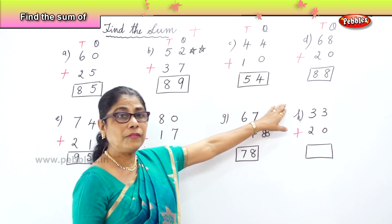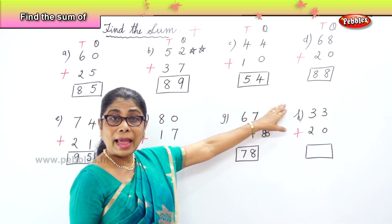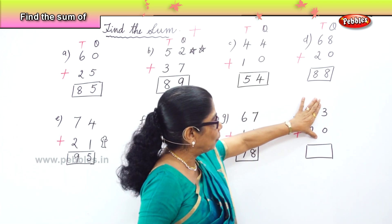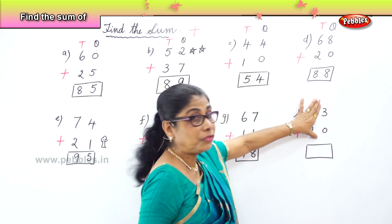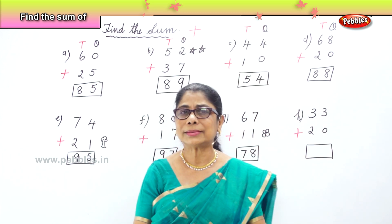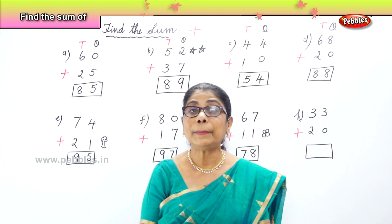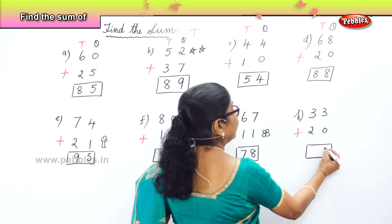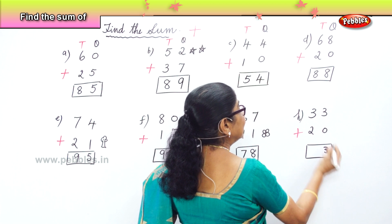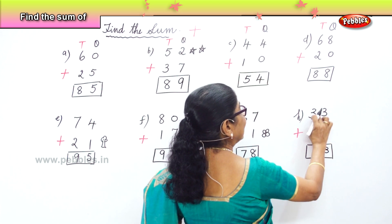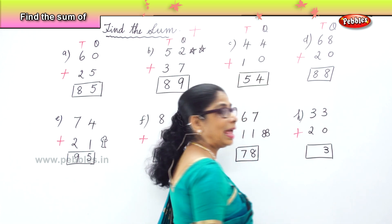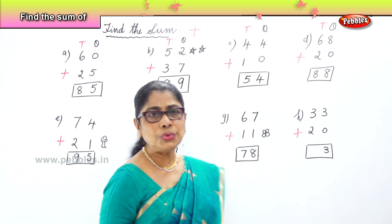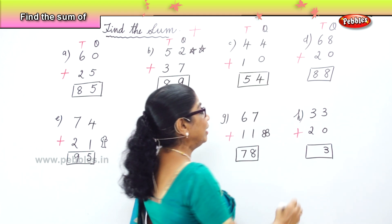Find the sum of 33 and 20. In the ones place you have 3 ones and 0 ones. 3 plus 0 is 3 itself — any number plus 0 is the number itself. Now you have 3 tens and 2 tens. 3 plus 2 is 5, so you have 5 tens.